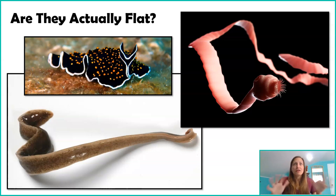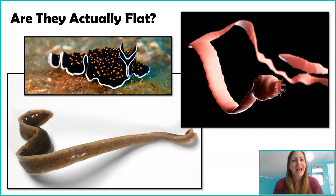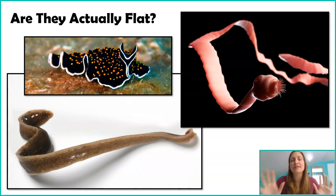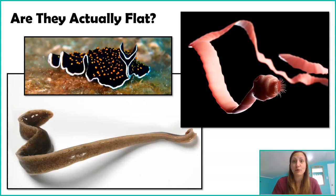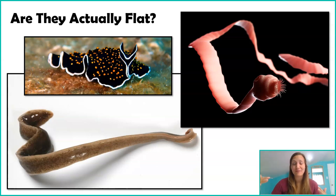There is an evolutionary reason to explain the flatness in these worms, and it has to do with the fact that they're missing a respiratory system. They don't have gills, they don't have lungs. Instead, every cell has to get the oxygen it needs through diffusion, because they don't have a circulatory system or a respiratory system in which oxygen can move around the body.